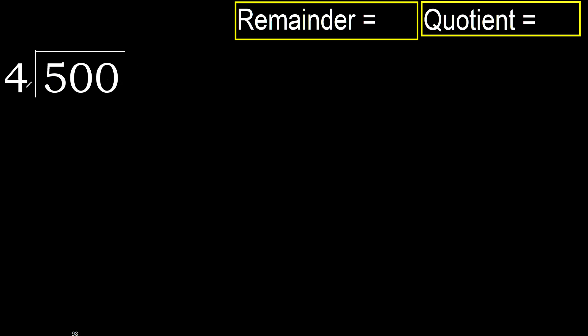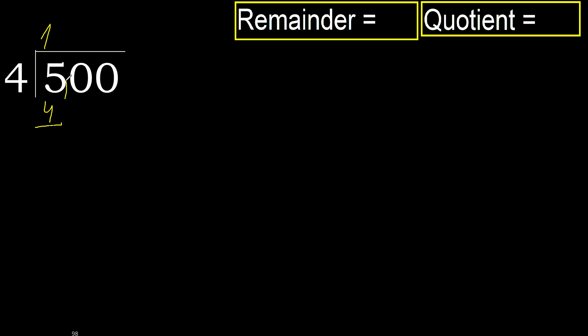500 divided by 4. 5 is not less, therefore with 5: 4 multiply by which number is nearest to 5 but not greater? 4 multiply by 2 is 8, 8 is greater. Multiply by 1 is 4, is not greater. Subtract, next.